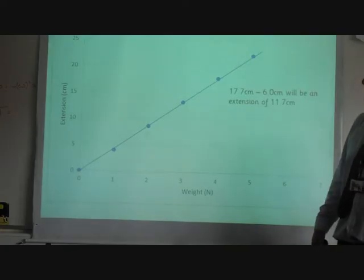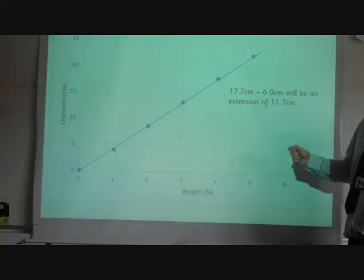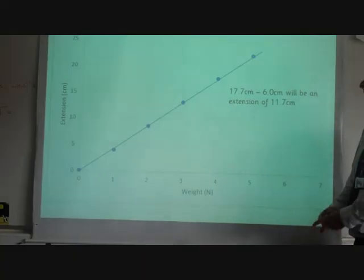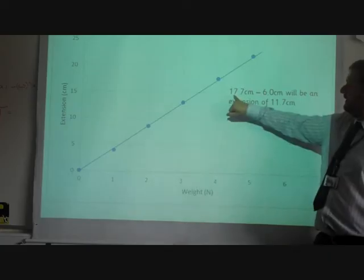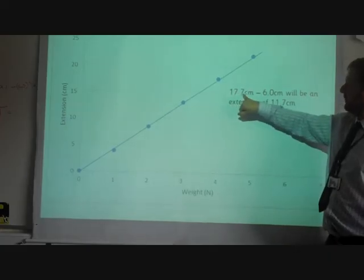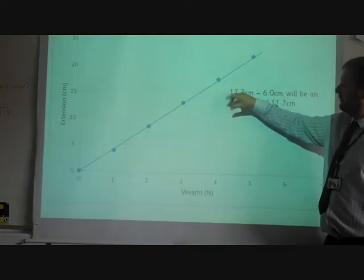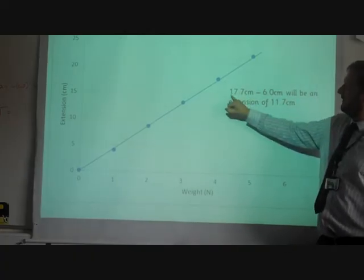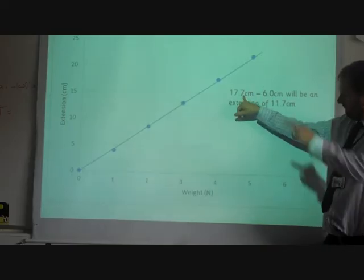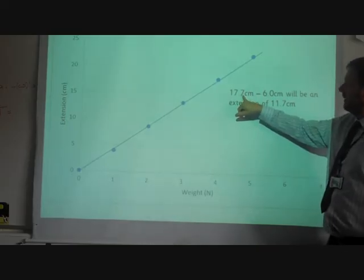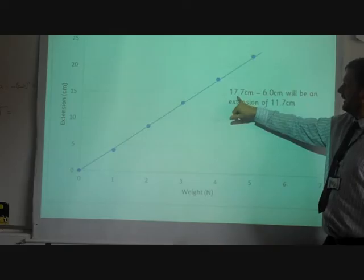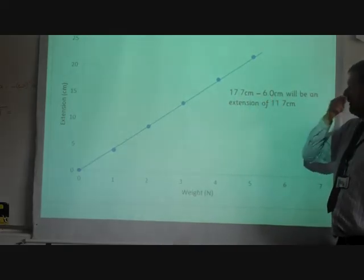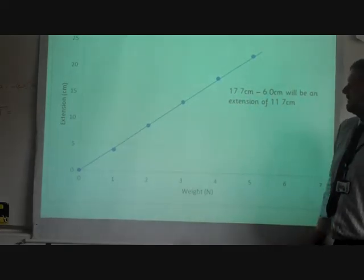Let's go back to the little challenge we had. We were trying to work out the unknown mass of that lump of iron, and we said that it stretched the spring by 17.7 centimeters. Now, that was the extended length. We need the extension. So the 17.7 was how much it was extended with the lump of iron on it, or steel on it. Minus the original length will give us an extension of 11.7.